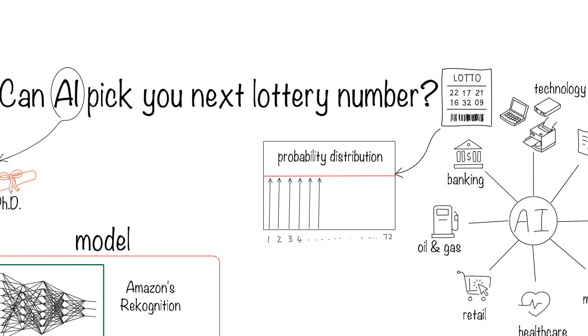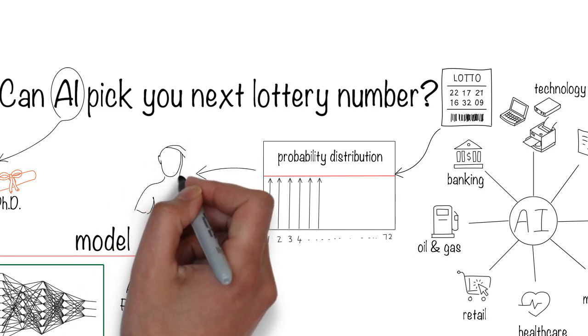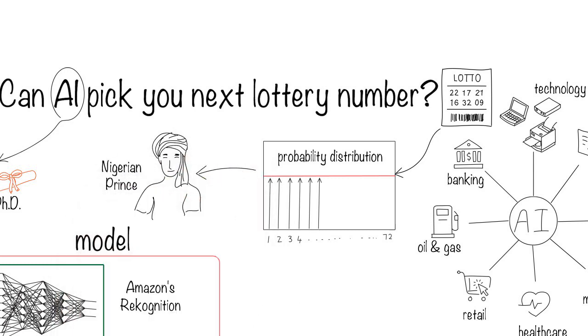If you build a machine learning system, or the Nigerian prince sells you one, you are effectively looking for patterns where none exist. That's why domain knowledge is extremely important to understand the data before you feed it into a machine learning algorithm.